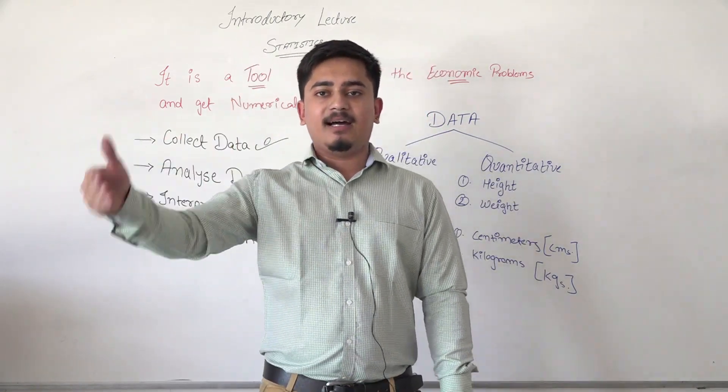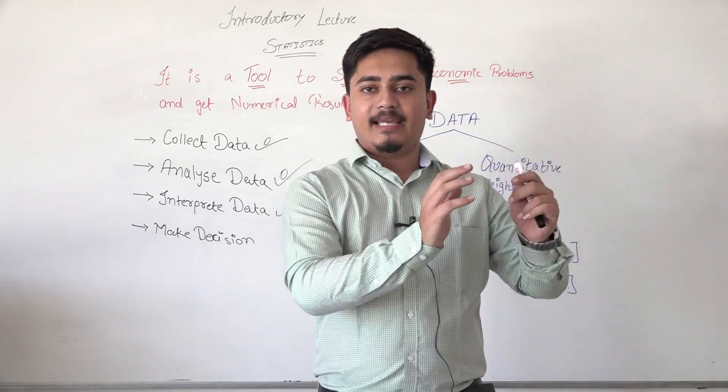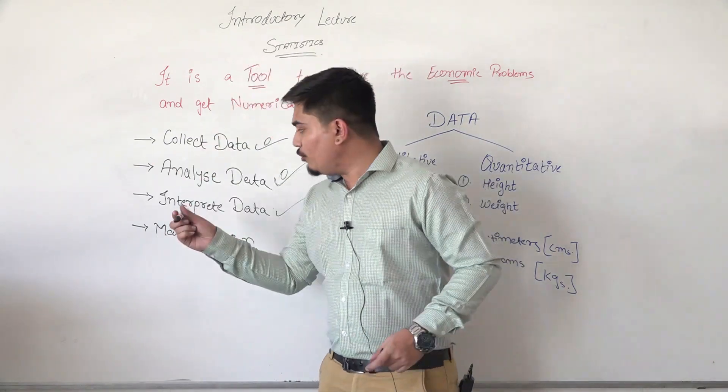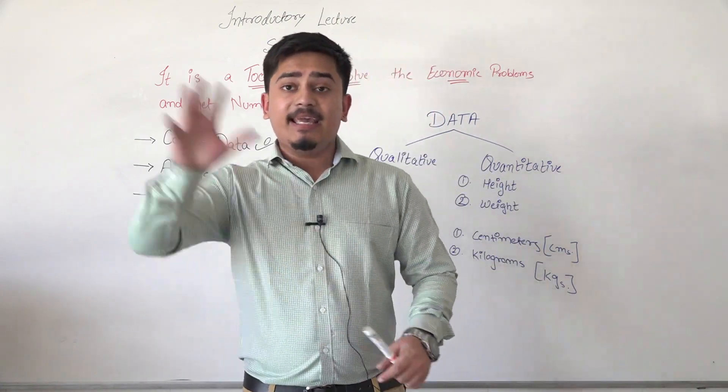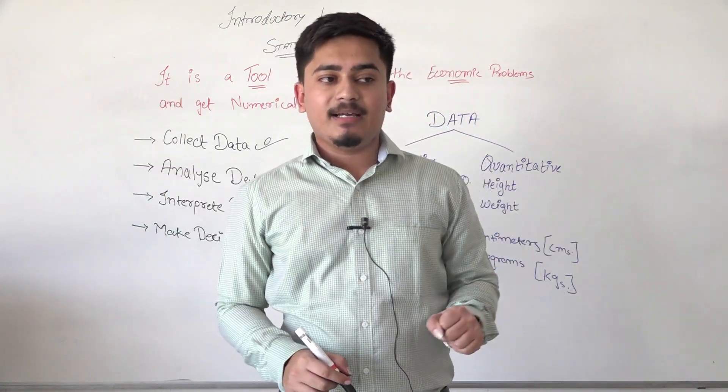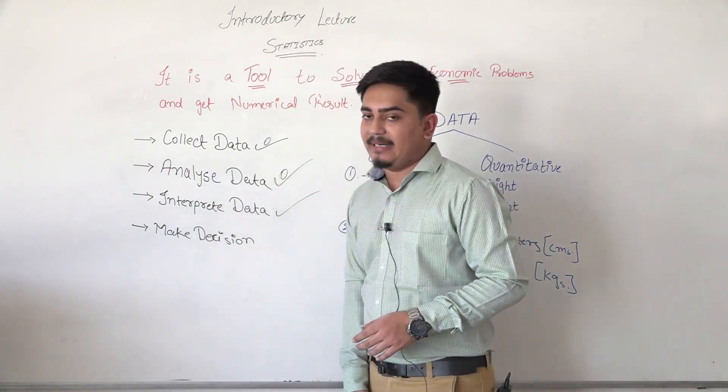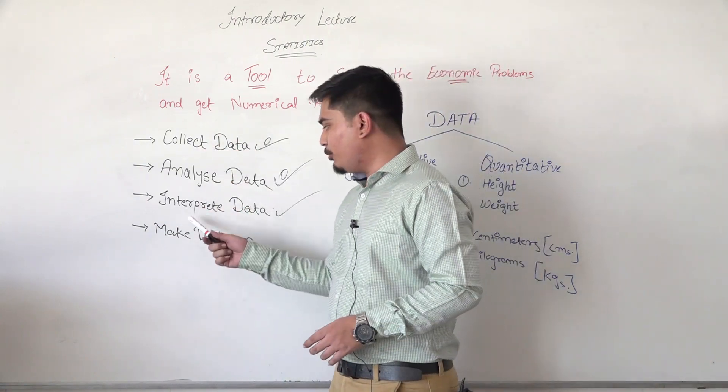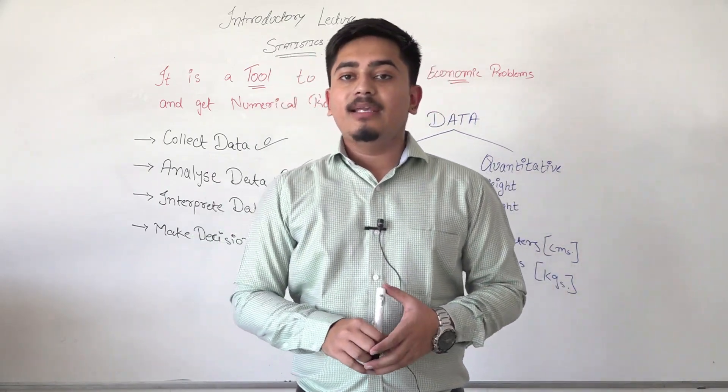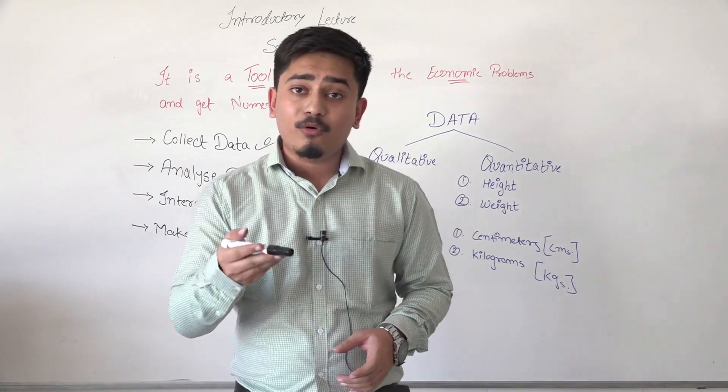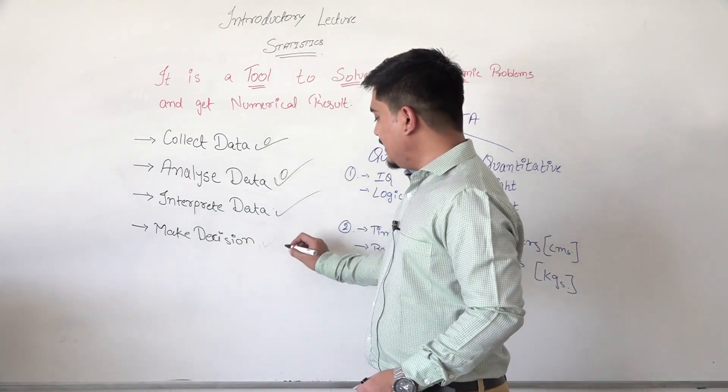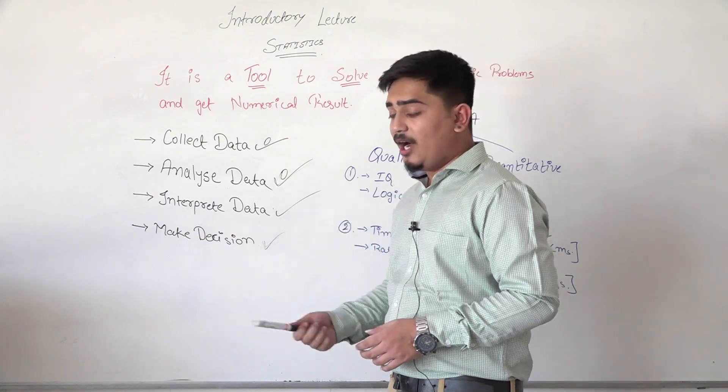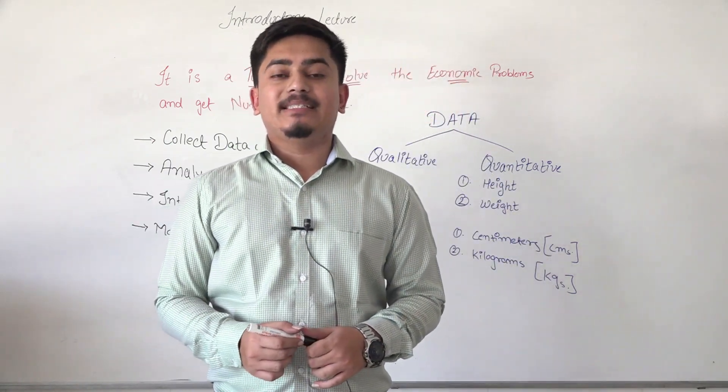The information we need from the data, what we read from it, that is interpretation of data. We analyze the data - OK, in the population there are these age groups, this weight, this height, this population in this area, that population in that area, different numbers of people living. We will analyze and interpret here, like what is the lifestyle of people living in this area versus that area. We interpret that data. Interpretation is essential because after collecting and analyzing data, some output should come. That output comes in the third stage. Once the output comes and we know what the data is saying, we have to take decisions based on that data. That is called decision making.